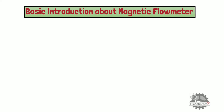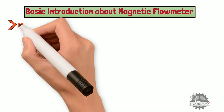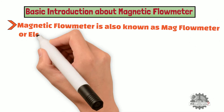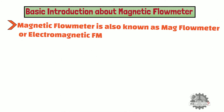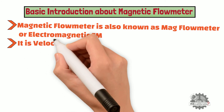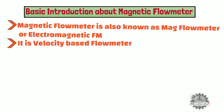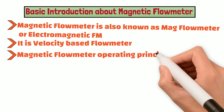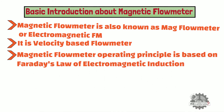Let's learn some basics about magnetic flowmeters. A magnetic flowmeter is also known as a mag flowmeter or electromagnetic flowmeter. It is a velocity-based flowmeter used to measure the volumetric flow rate of liquids. Its operating principle is based on Faraday's law of electromagnetic induction: when a conductive medium passes through a magnetic field, a voltage is generated proportional to the velocity of the medium, the density of the magnetic field, and the length of the conductor.